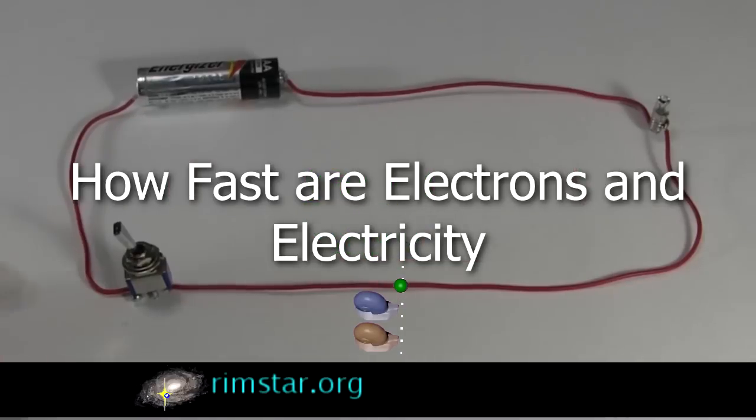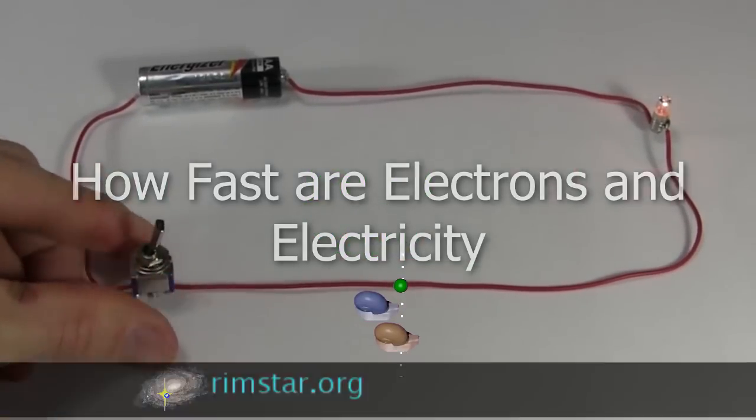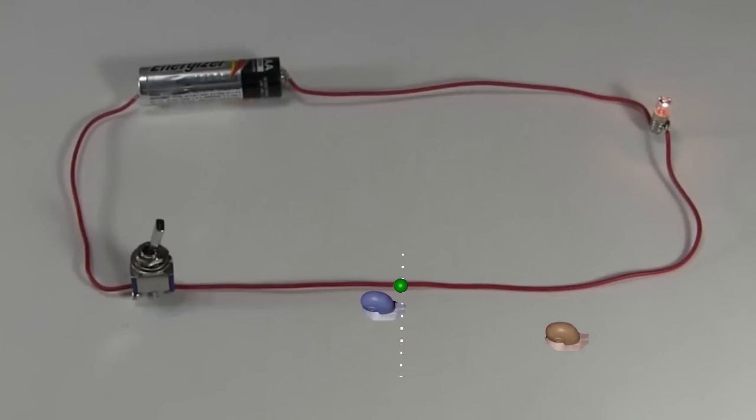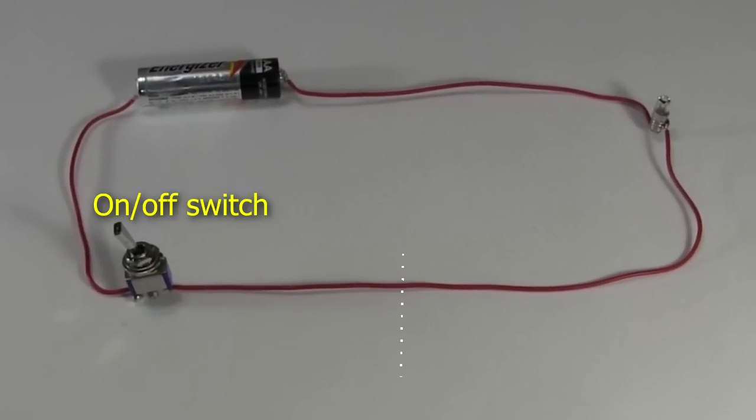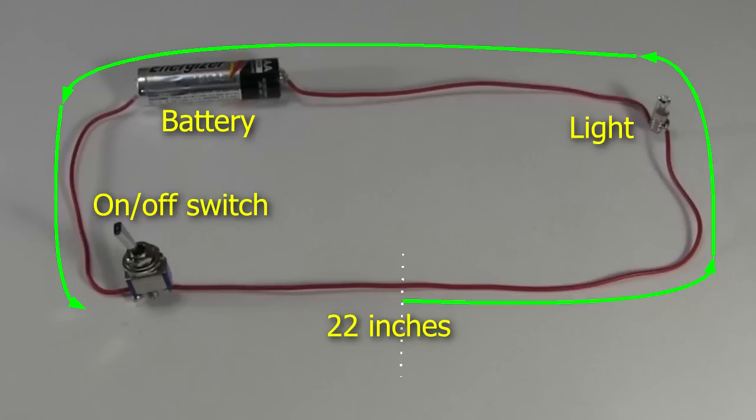How fast does an electron move down a wire? Which would win in a race, an electron or a snail? Let's answer the second question first. You may be surprised to learn that the snail would win, easily. Let's use this electrical circuit as our racetrack. It has an on-off switch, a battery, and a light. The distance around our racetrack is 22 inches.